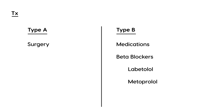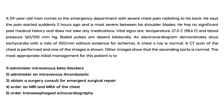Now let's go through a clinical vignette. A 59-year-old man comes to the emergency department with severe chest pain radiating to his back. The pain started suddenly two hours ago and is most severe between his shoulder blades. He has no significant past medical history and takes no medications. Vital signs: temperature 96, blood pressure 160 over 100. Radial pulses are absent bilaterally. ECG shows sinus tachycardia at 100 without ischemia. Chest x-ray is normal. CT of the chest is performed, and other images show that the ascending aorta is normal.